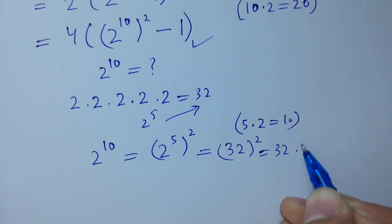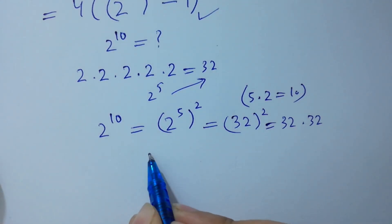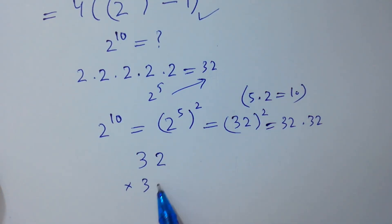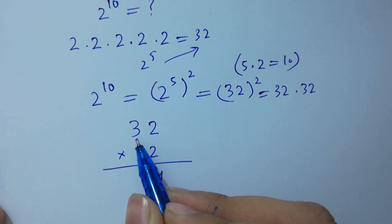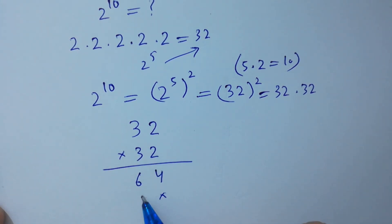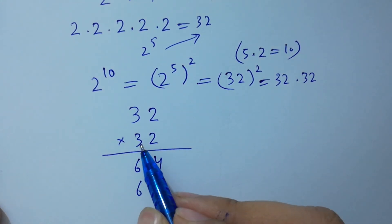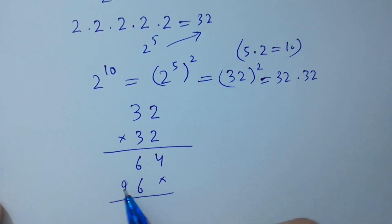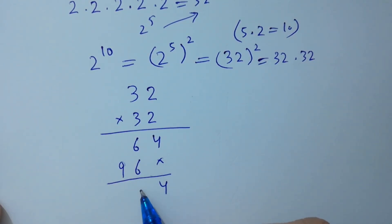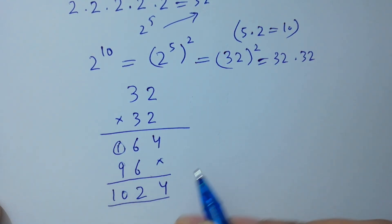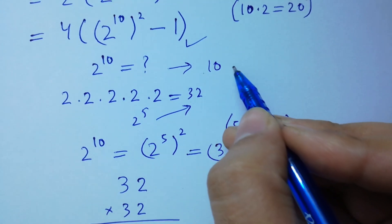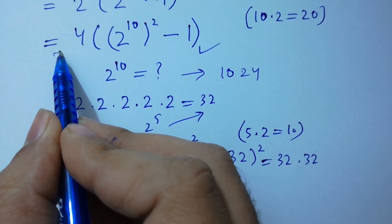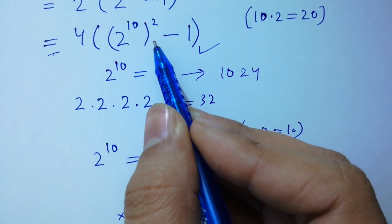So we need to multiply 32 times 32. Computing: 2 times 2 is 4, 3 times 2 is 6, 3 times 2 is 6, 3 times 3 is 9, giving 46 plus 6 is 12, carry 1, 9 plus 1 is 10. So 2 to the power 10 is equal to 1024.